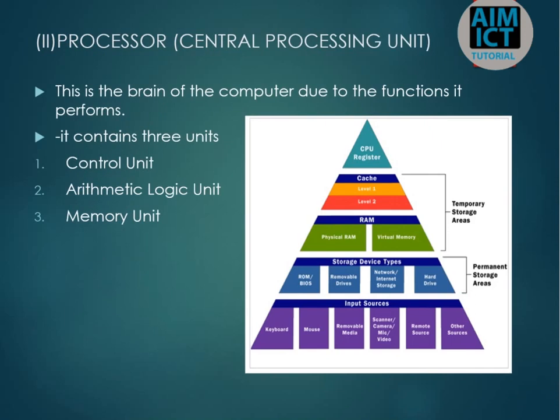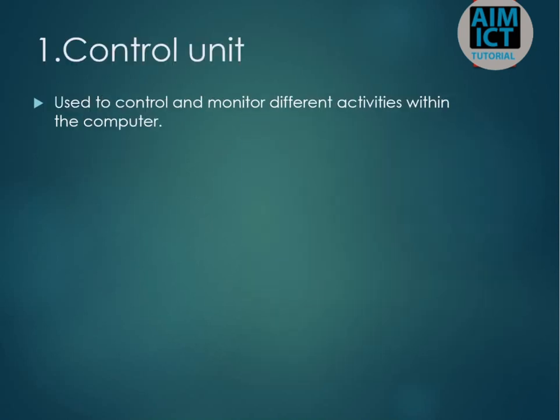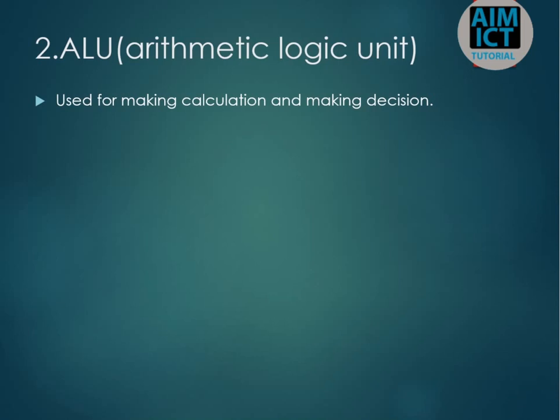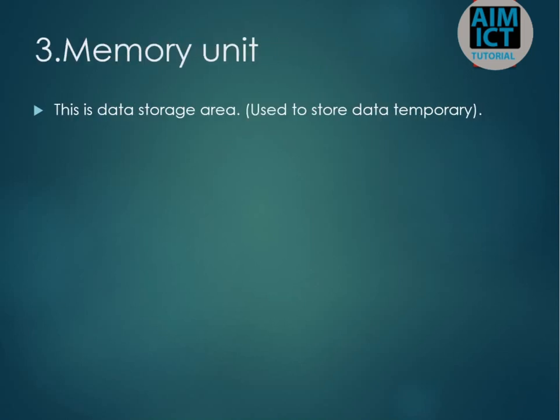We also discussed the processor, or CPU — the Central Processing Unit. This is the brain of the computer. It contains three units: the Control Unit, the Arithmetic Logic Unit, and the Memory Unit. The Control Unit controls and monitors different operations within the computer. The ALU performs calculations and decision-making.